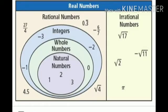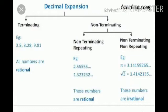By seeing this picture we can understand in a better way what rational and irrational numbers are. Many students are confused about terminating and non-terminating decimals. When a fraction is divided and its division completes — we get remainder zero — it means it is a terminating decimal.